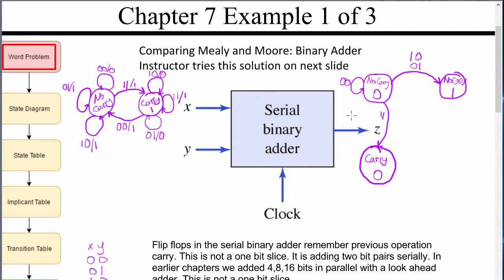Now let's go to the carry-outputting-0 state. If I get 0,0: 0+0+0=0, I want to output 0 and there's no carry, so I go back to the no-carry/output-0 state. If I get 1,0: 1+0+0=1, I want to output 1 with no carry, so I stay at the no-carry/output-1 state. Same thing for 0,1. If I get 1,1: 1+1+0=10, that's a carry with output 0, so I go down to carry state. Now in the no-carry/output-1 state, if I get 1,1: 1+1+0=10, that gives a carry with output 0 — I go down here.